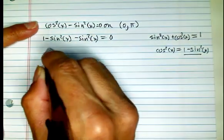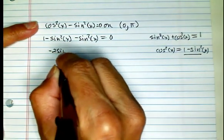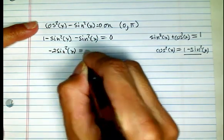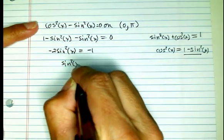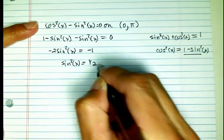Now let's do some simplification, and we get minus 2 sine squared x equals minus 1, or sine squared x equals positive 1 half.